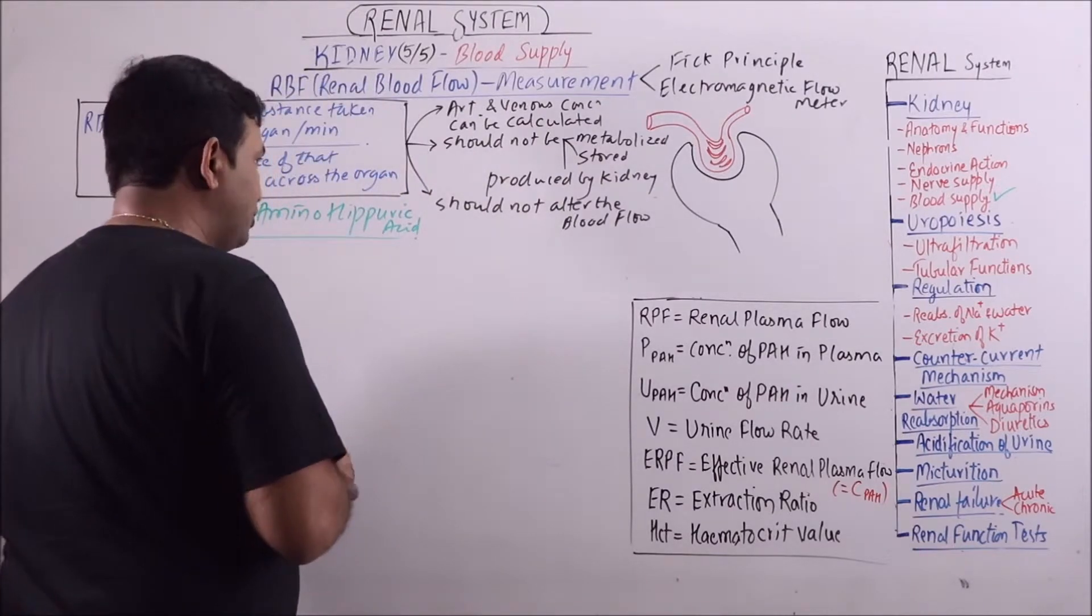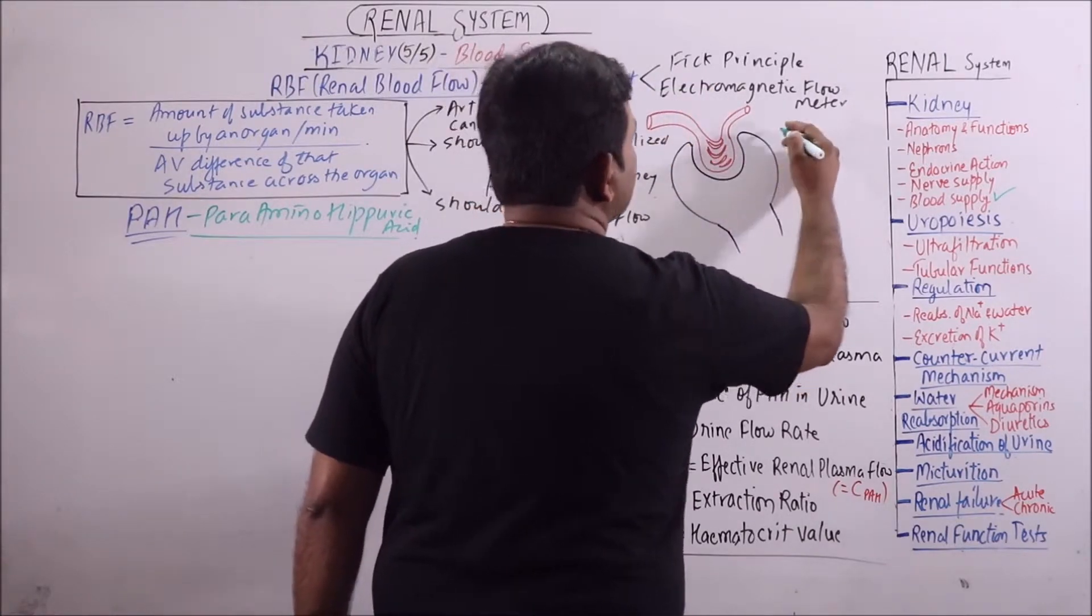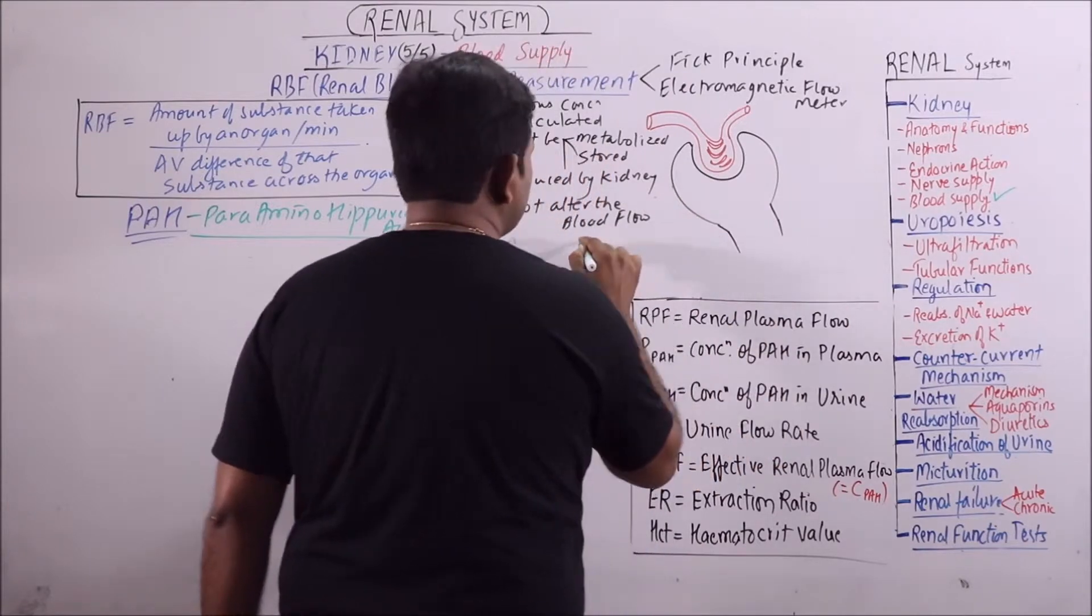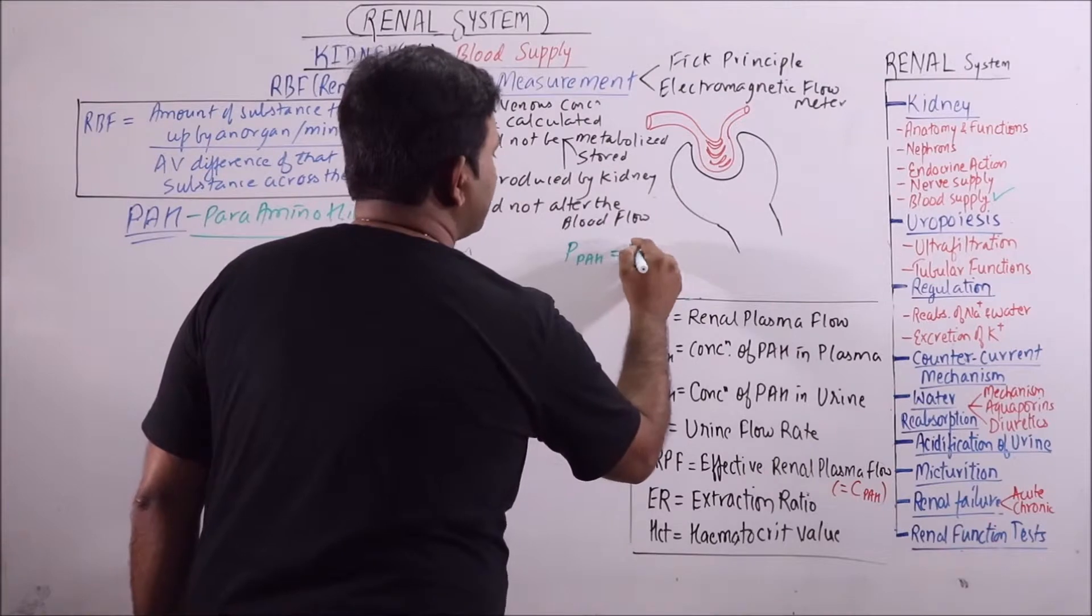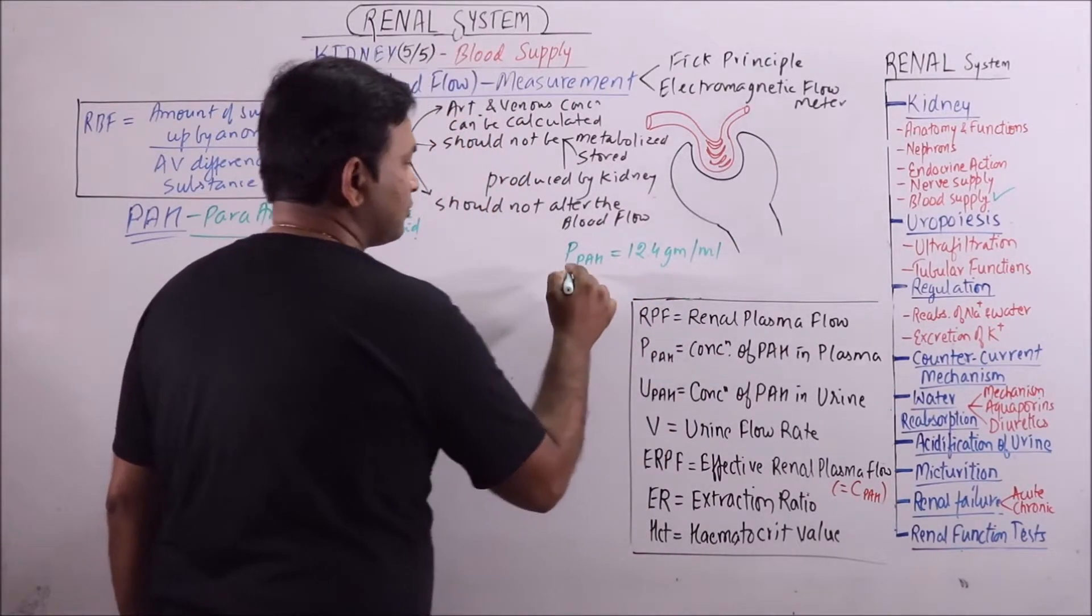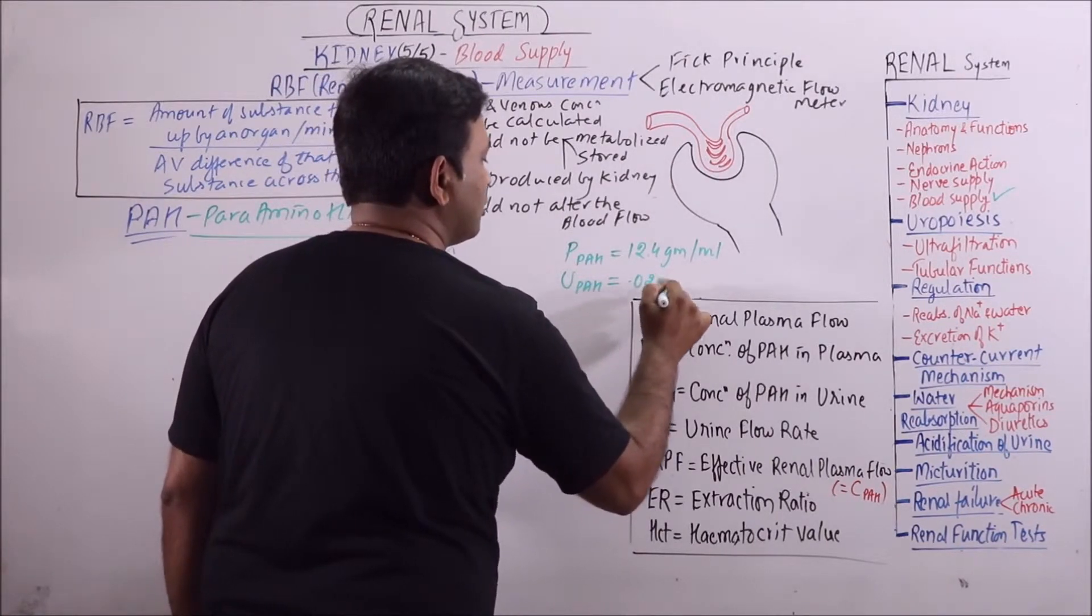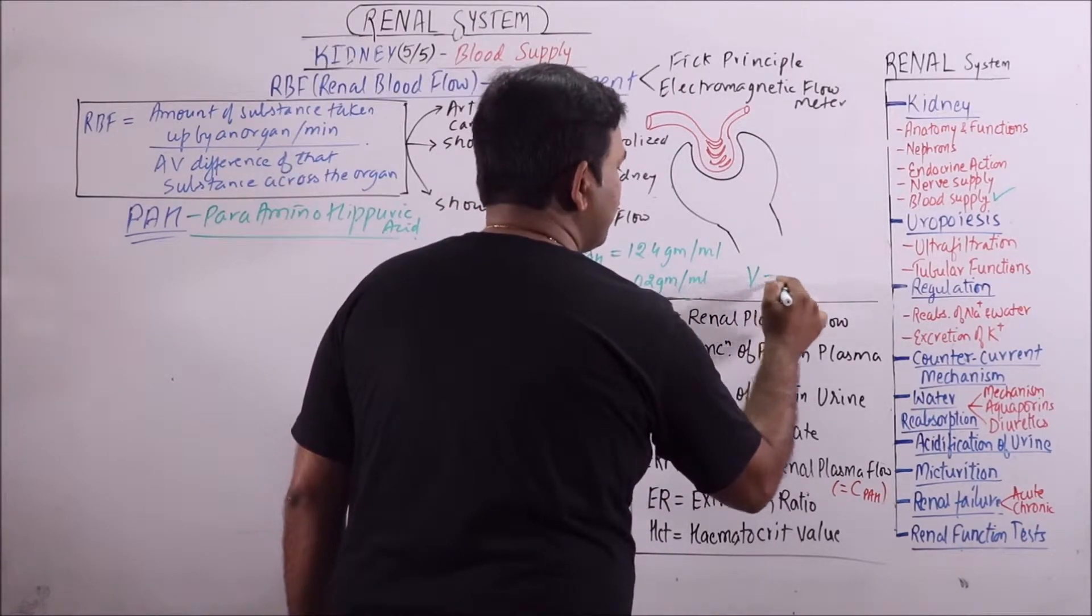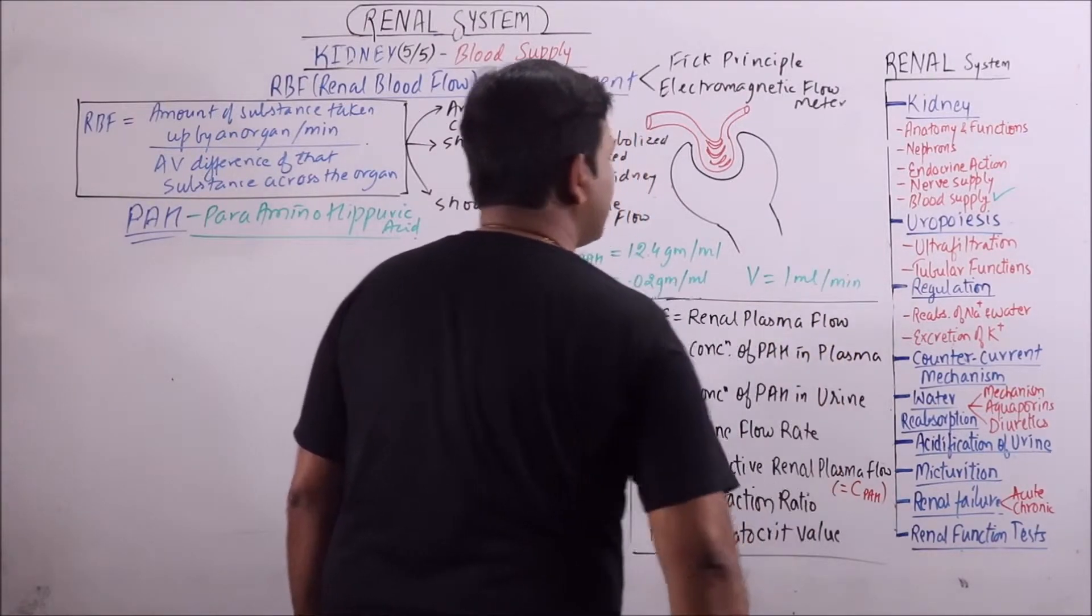Now we are taking some values for calculation. PPAH is 0.02 grams per 100 ml. UPAH is 12.4 grams per 100 ml. Then urine flow rate is 1 ml per minute.